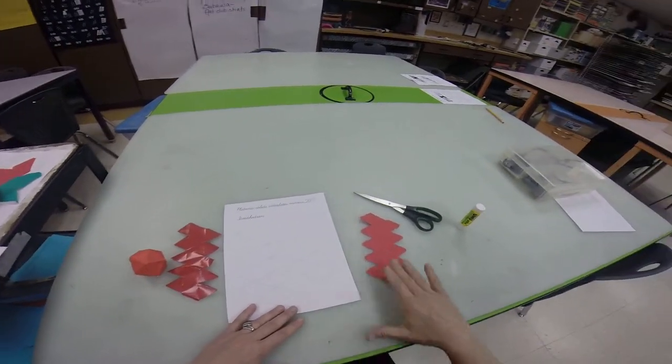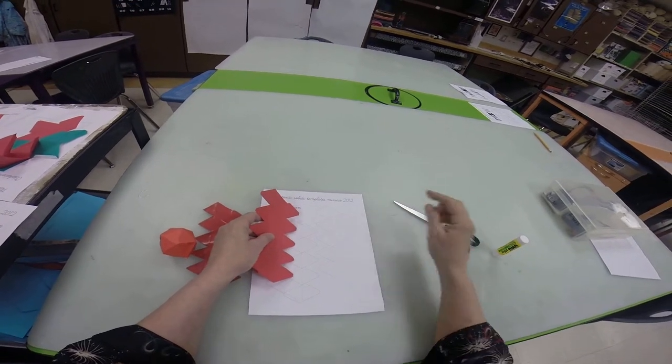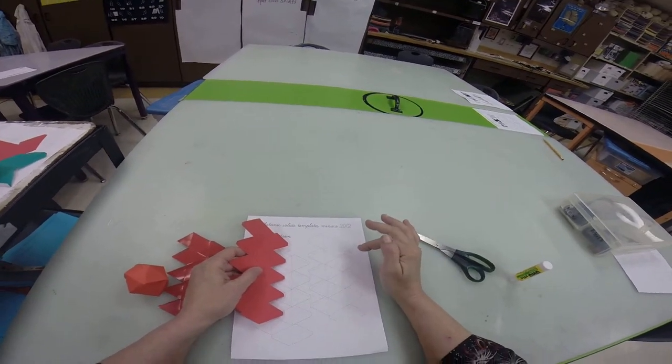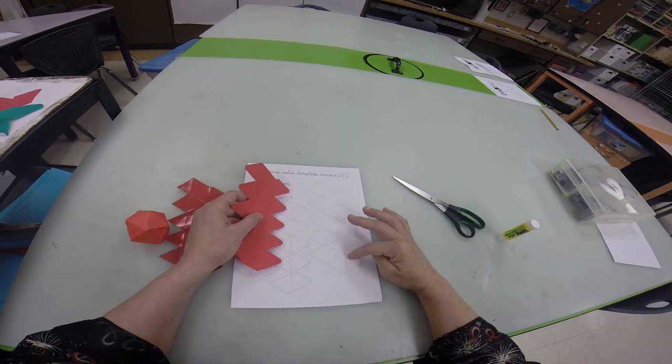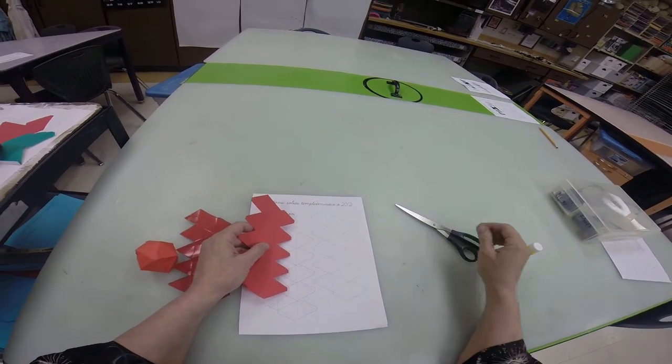There's two on each page. So you're going to start by cutting on the outside lines. And general rule here is you are cutting on the solids and you are folding on the dotted lines.